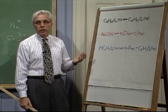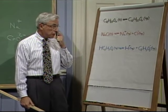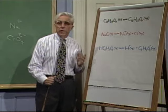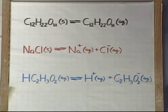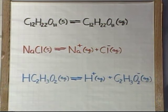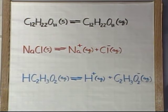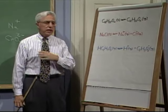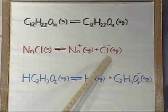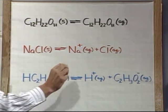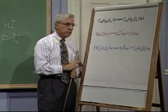An aqueous solution of sucrose will not conduct electricity. This can be contrasted with an aqueous solution of sodium chloride — common ordinary table salt. When you dissolve sodium chloride in water, you get nothing but ions; it breaks apart 100% to form ions. Dissolving salt in water produces a solution containing a plethora of sodium and chloride ions, making it an excellent conductor of electricity.